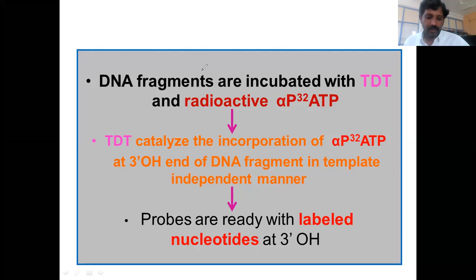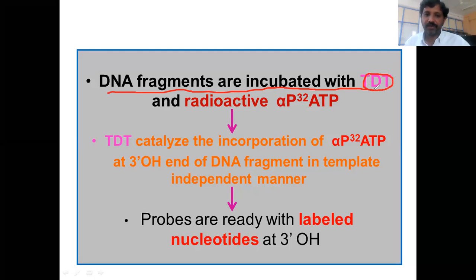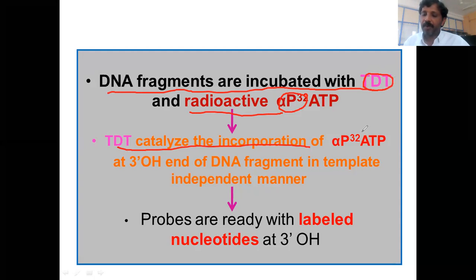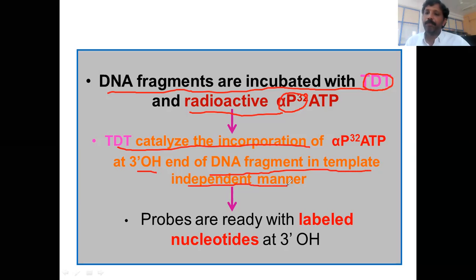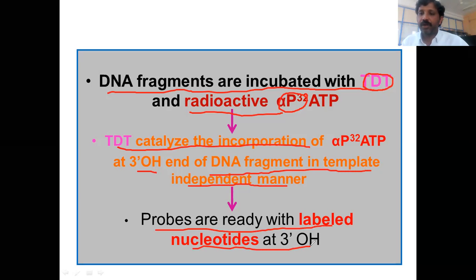Here you see the protocol for three prime end labeling. DNA fragments are incubated with TdT — Terminal Deoxynucleotidyl Transferase — and radioactive ATP where the alpha phosphate is radio-labeled. TdT catalyzes the incorporation of alpha-phosphate ATP at the end of the DNA fragment in a template-independent manner. Probes are then ready with the labeled nucleotides at the end.